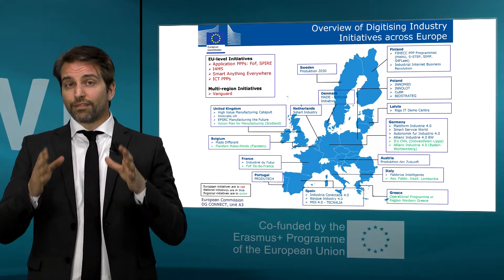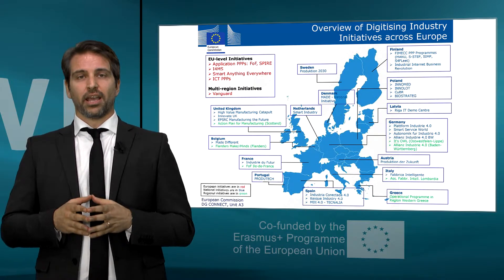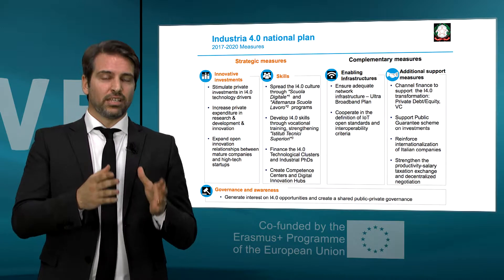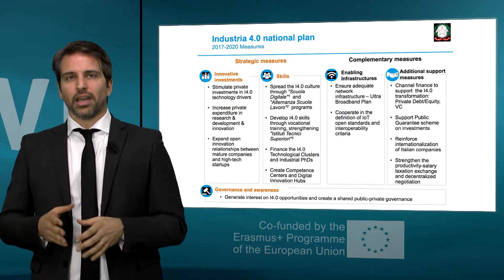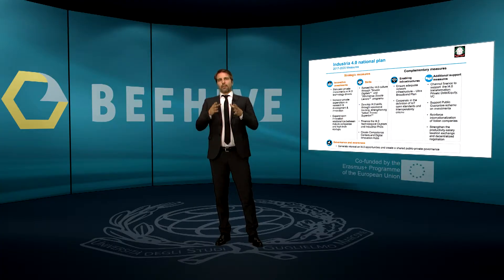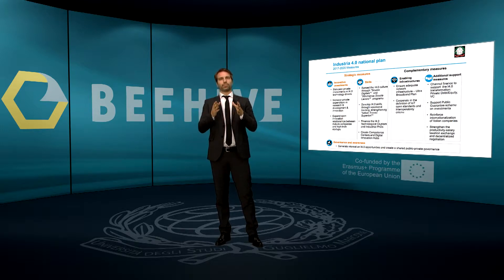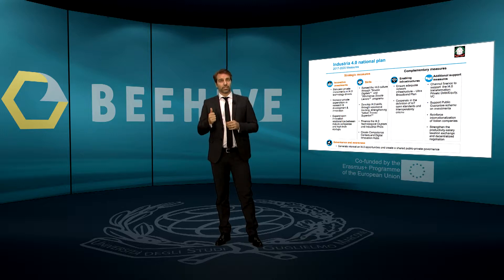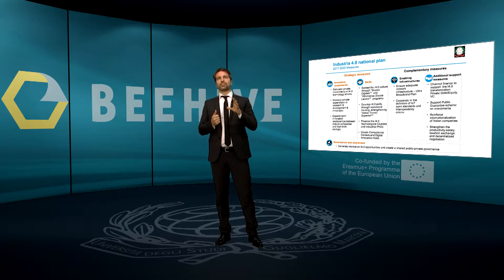In this lecture we will focus on the Italian National Plan which runs from 2017 to 2020, and which is basically founded on fiscal incentives. By the end of 2016, the Italian government, in order to implement the digital transformation, launched a plan allocating 13 billion euros in order to reinforce innovative investments, by increasing money in research and development activities, and by strengthening the financial services to support startups and innovative companies.